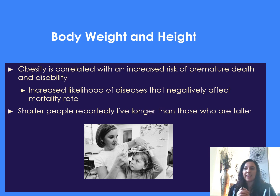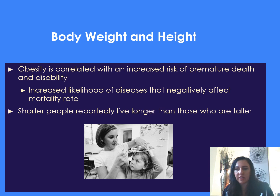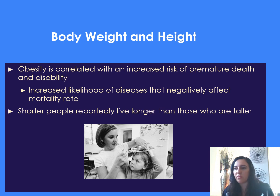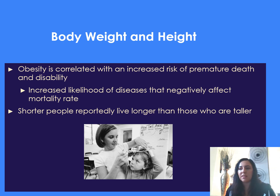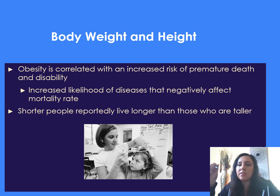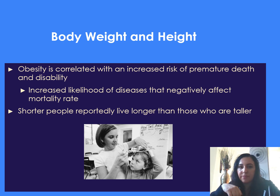Regarding body weight and height, weight gain in early adulthood through midlife is related to increases in both fat and muscle mass. However, weight loss at an older age is associated with a higher risk for a disproportionate decline in muscle mass. Obesity itself is correlated with an increased risk of premature death and disability.